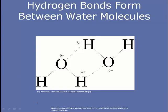Polarity results in hydrogen bonding between molecules. A positively charged hydrogen atom in one water molecule will be attracted to a negatively charged oxygen atom of another molecule, resulting in a hydrogen bond. And you can see that there's another hydrogen bond over here.